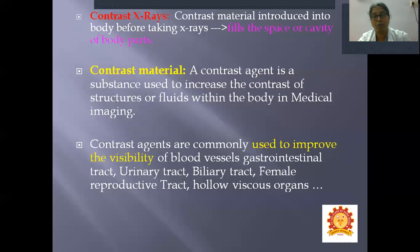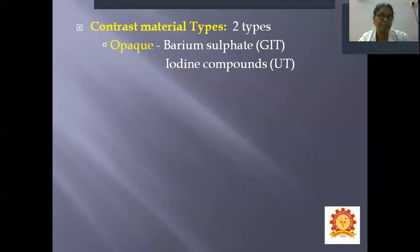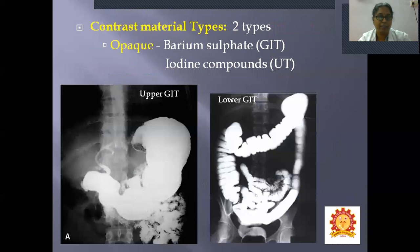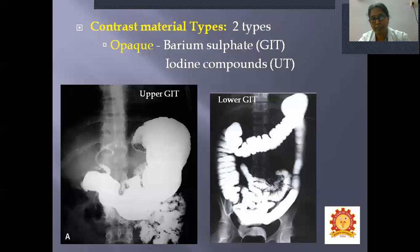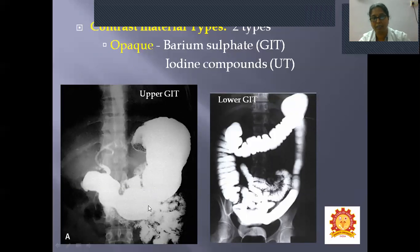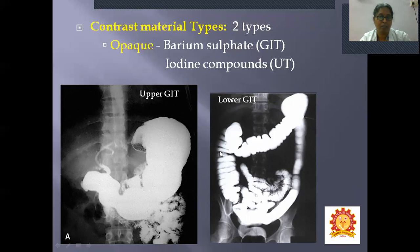A contrast agent is a substance used to increase the contrast of structures or fluid within the body in medical imaging. Contrast agents are commonly used to improve the visibility of blood vessels, the GI tract, urinary tract, biliary tract, female reproductive tract, and other hollow visceral organs. Contrast materials are of two types: opaque — for example, barium sulphate, which is commonly used to visualize the GI tract — and iodine compounds, used for all other hollow structures such as the urinary tract.